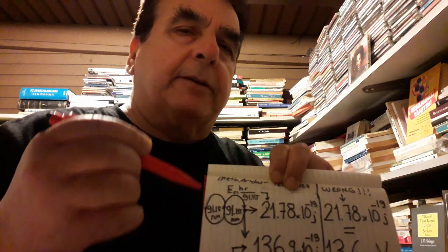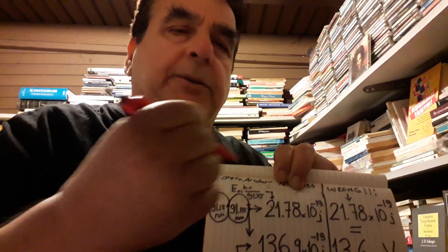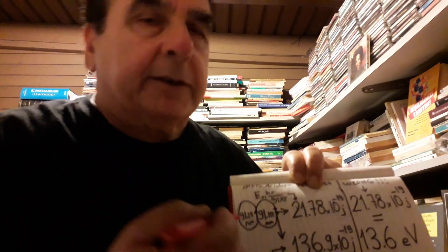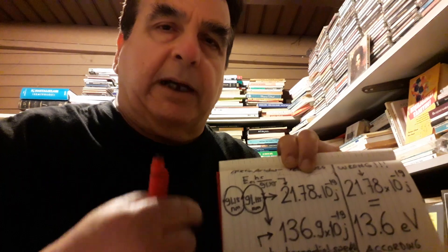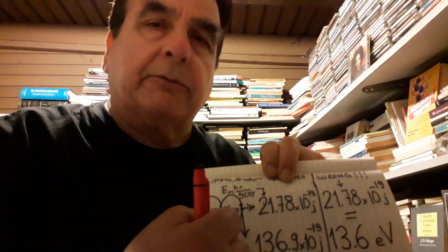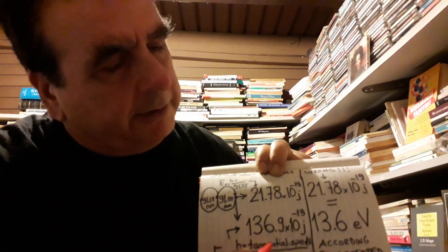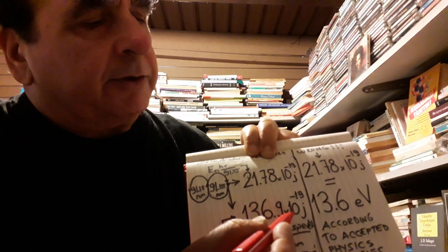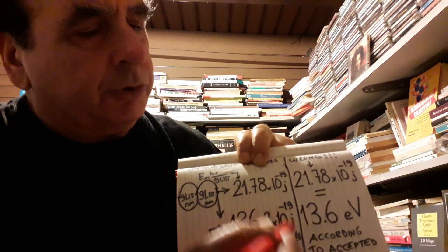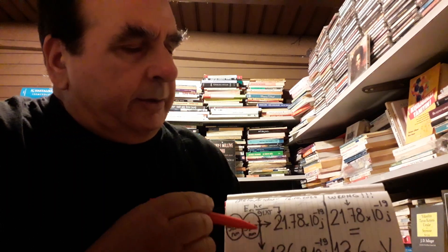So if hydrogen electron motion forms radius or wavelength is equal to 136.9×10^-19 joules here.